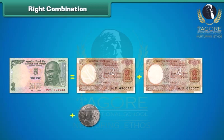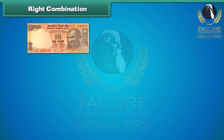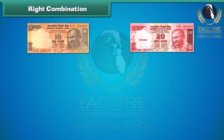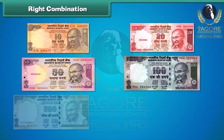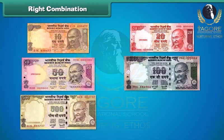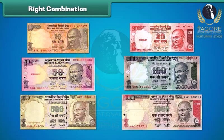Similarly, we can have different right combinations for 10, 20, 50, 100, 500, and 1,000 rupee notes.